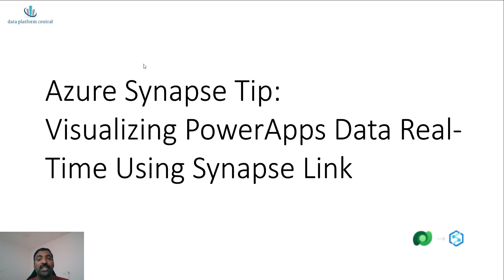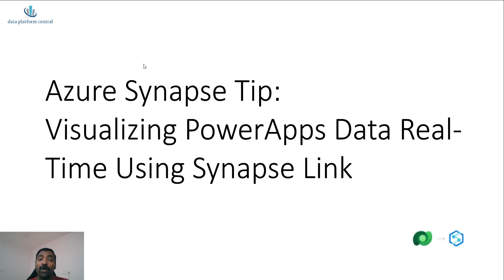For this week's illustration we are going to take a PowerApp and a table in Dataverse which sits in the background. Based on the data you enter through your PowerApps, the data from your Dataverse table will be linked close to real-time with your Synapse workspace. We will then add a Power BI report which makes use of the Synapse on-demand SQL pool to access the exposed table from Dataverse, giving you close to real-time data in Power BI. Let's go straight to the illustration.